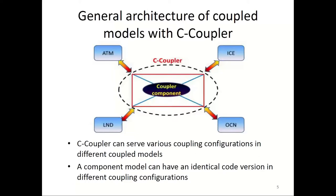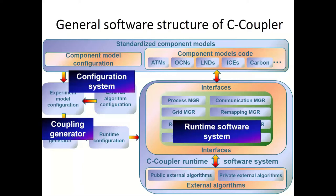To develop a new couplers family, we designed a general structure of coupler models with C-Couplers. This general architecture includes two ideas: first, C-Couplers can serve various coupling configurations in different coupler models; second, a component model can have an identical code version in different coupling configurations. Motivated by this general architecture, we designed the general software structure of C-Couplers. It consists of a configuration system, a coupling generator, and a runtime software system. The coupling configuration system can be viewed as a high-level language; the coupling generator as a compiler that transforms the high-level language to low-level language that drives the runtime software system, which can be viewed as a physical processor in a modern computer.